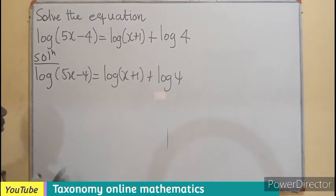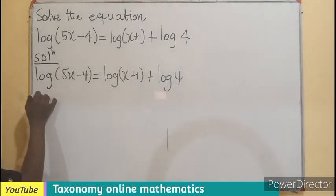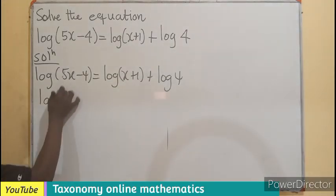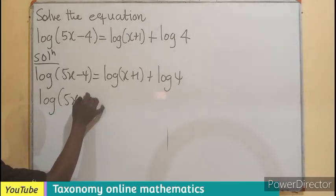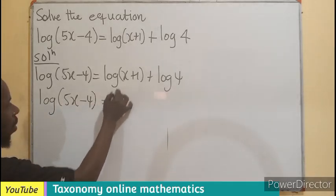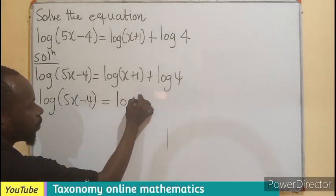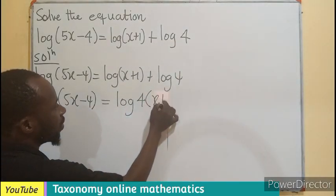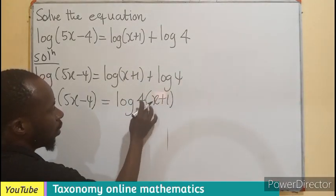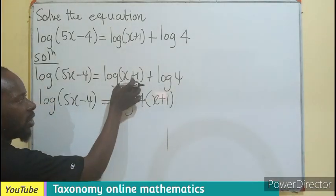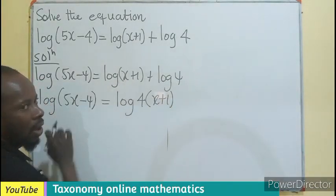So we are going to employ the multiplication law here. So this will become log(5x-4) equals to the log of 4 multiplying x+1. We are only multiplying the argument, which is the numbers, leaving the logarithm.